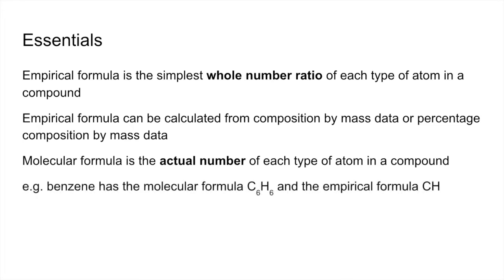So an example there, benzene has the molecular formula C6H6, so it's actually got six carbons and six hydrogens. But the simplest whole number ratio of each type of atom in the compound is CH.